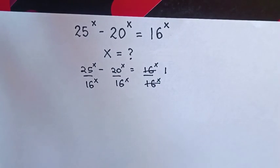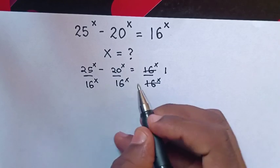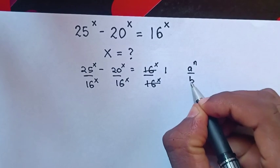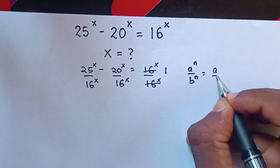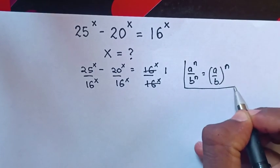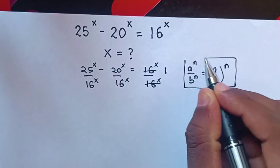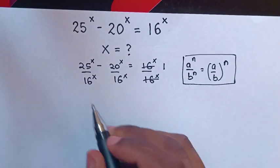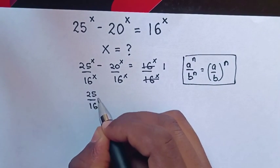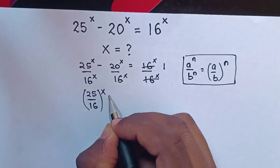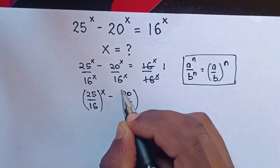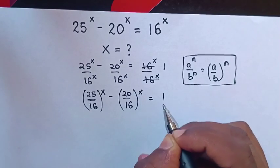Now from here, we have a common power of x, so we will apply the exponential rule that a power n over b power n is equal to (a over b) bracket power n. So in our equation it will be (25 over 16) bracket power x minus (20 over 16) bracket power x is equal to 1.